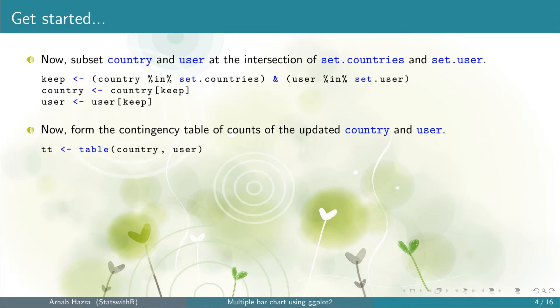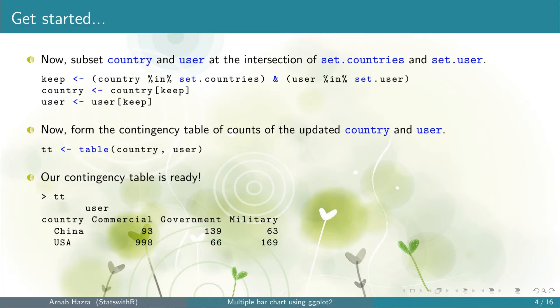Now we are ready to create the contingency table. For that we use the function table() with the first argument country — this will be considered row-wise — and the second argument user — this will be considered column-wise. Once we run the code, the contingency table tt is ready.